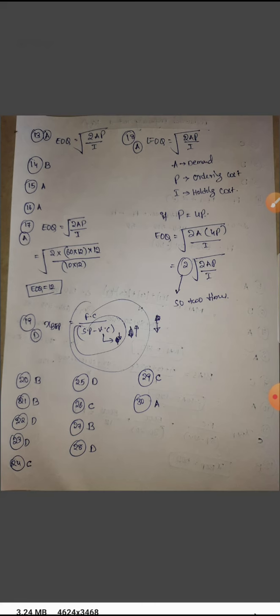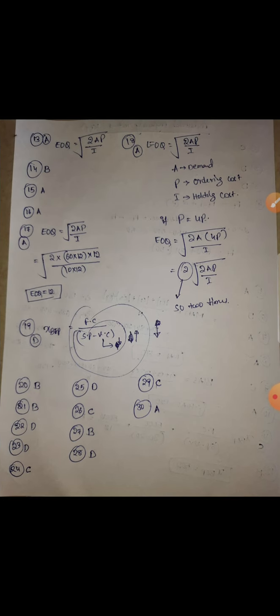Fourteenth is B. At EOQ, cost of carrying equals cost of ordering, so P equals I. Fifteenth is A. No safety stock. For ABC analysis inventory forecasting, for A type there is no need of safety stock.